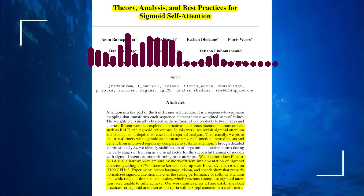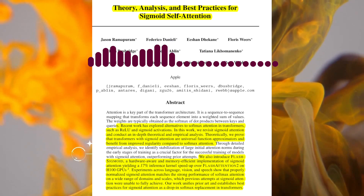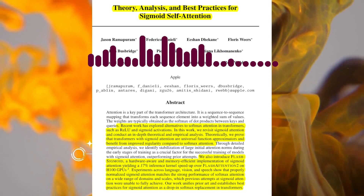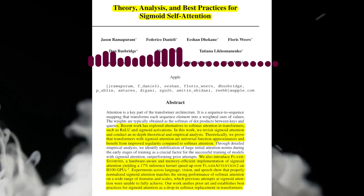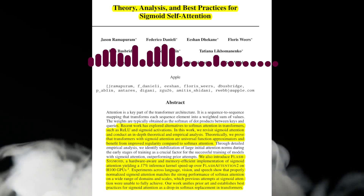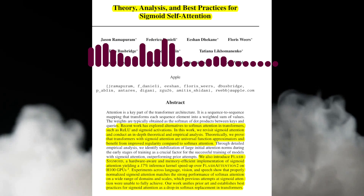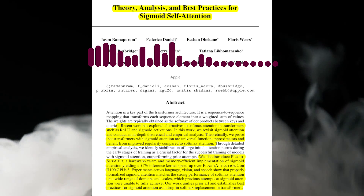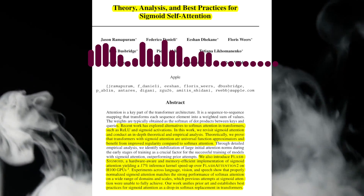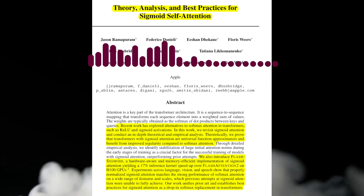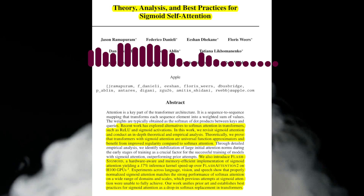What are the main motivations behind this change? The paper argues that the softmax function, while effective, has some limitations. One issue is that it can lead to a concentration of attention on just a few features, potentially neglecting other important information in the input data. Additionally, the softmax operation requires a row-wise reduction, which can slow down computations, especially in efficient attention kernels. The authors propose using a sigmoid function instead, which is applied element-wise and avoids the row-wise reduction, potentially leading to faster and more memory-efficient implementations.